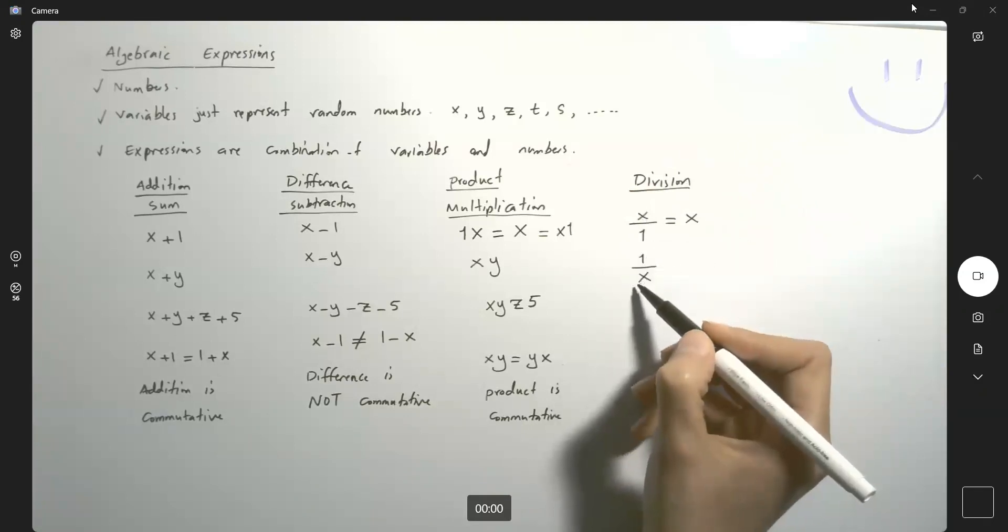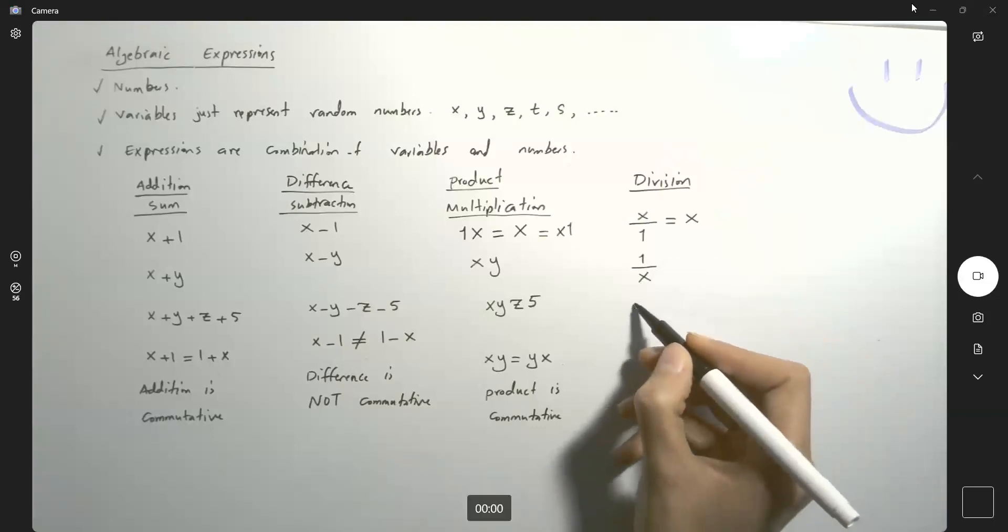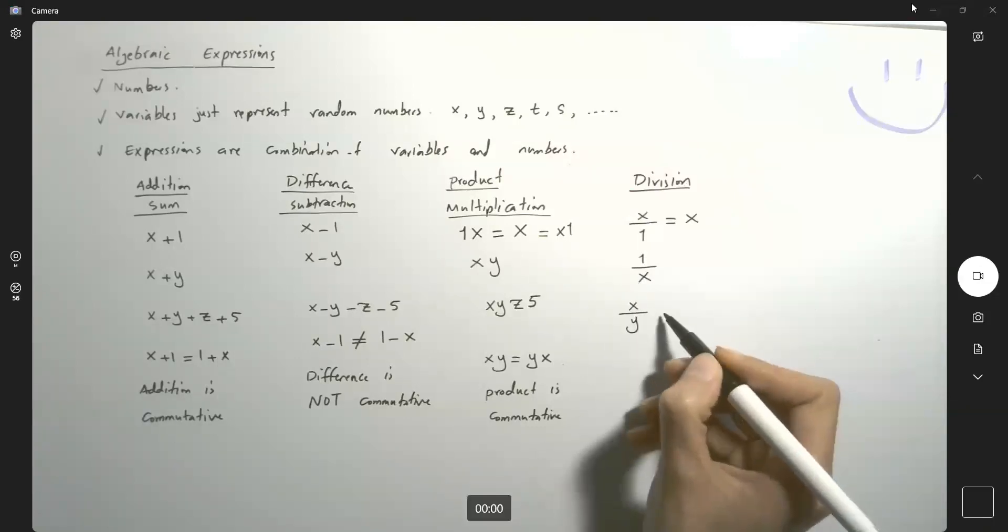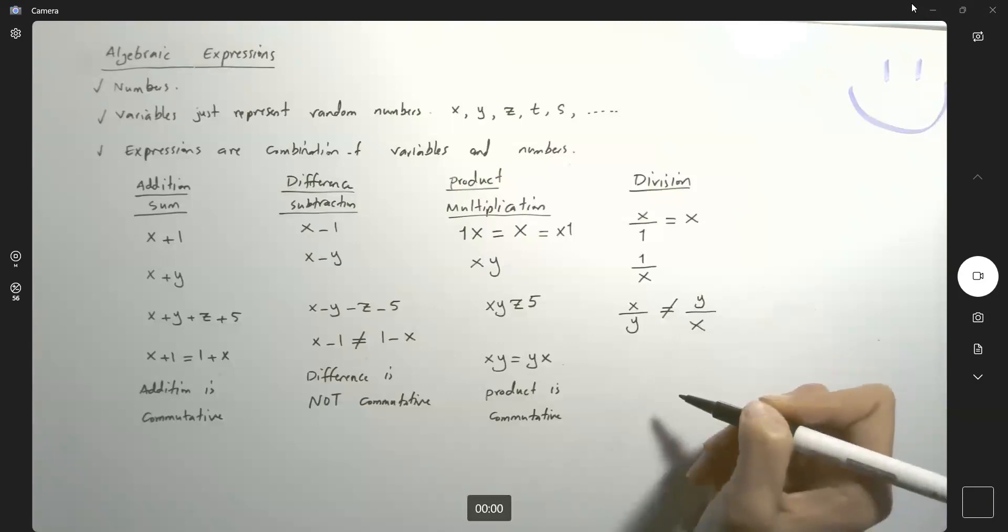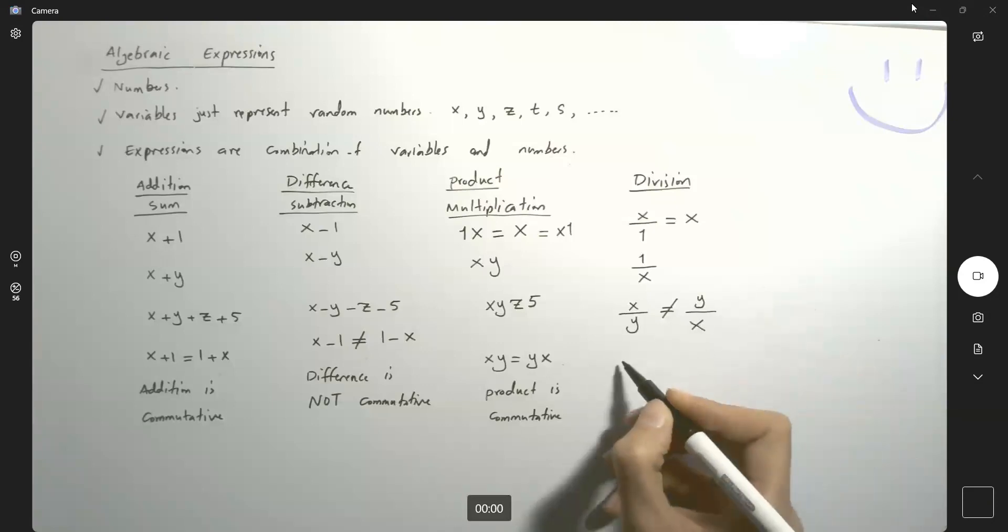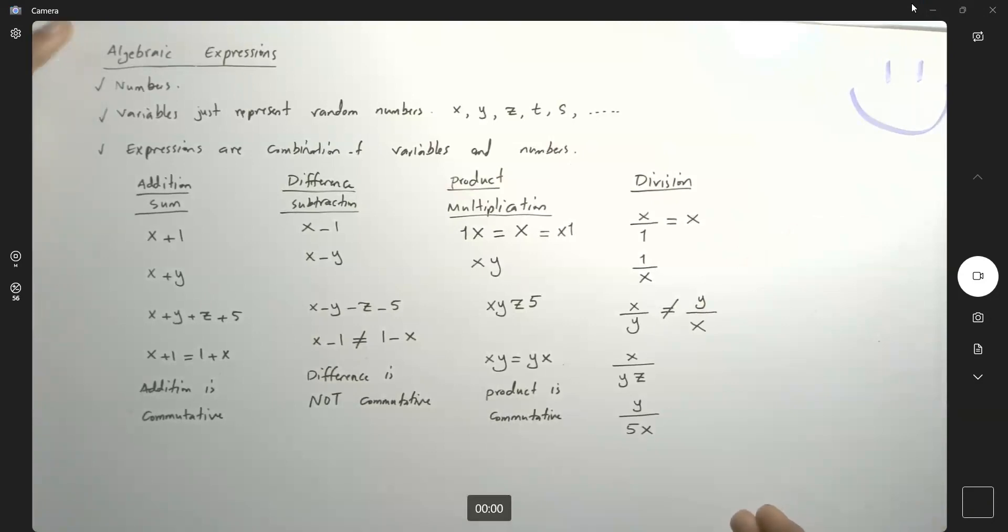X divided by y is not the same as y divided by x. It's not commutative. You can divide variables. X divided by y times z. You can have y divided by 5x. These are all divisions that you're allowed to define. These are all algebraic expressions.